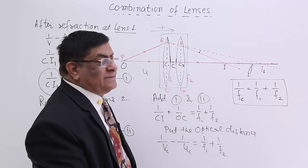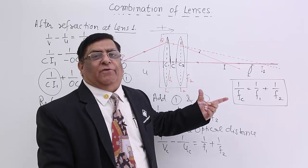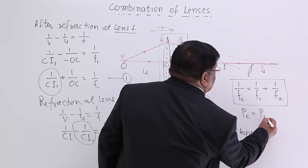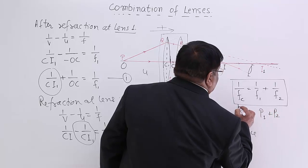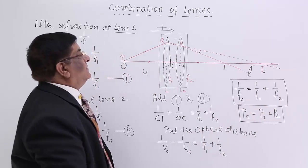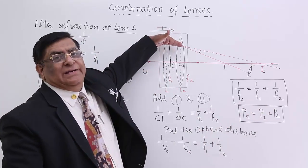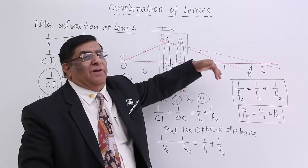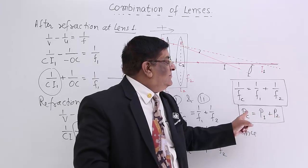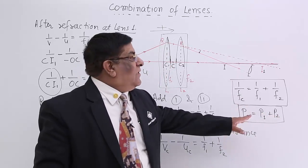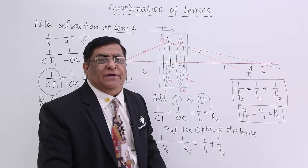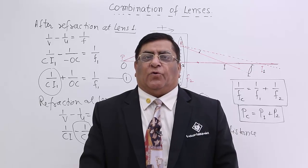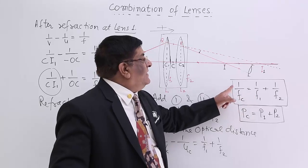Please remember this result. If we want to convert it into the power formula, since power is the inverse of focal length, we get: Power of combination = Power of first lens + Power of second lens. This is intuitive — if lens 1 bends the ray by 20 degrees and lens 2 bends it by 10 degrees, the total bending is 30 degrees. When we join two lenses, their powers simply add up.